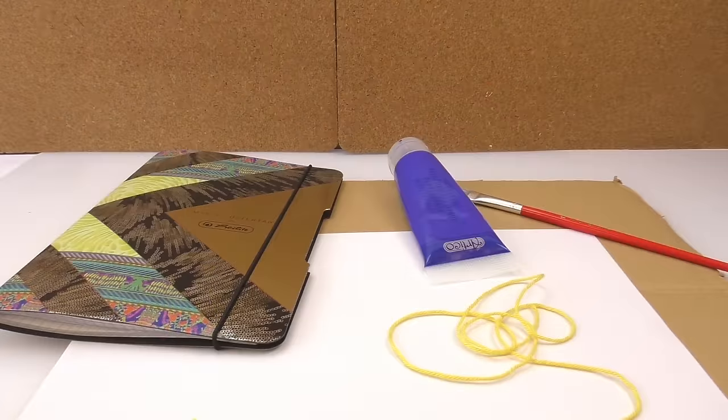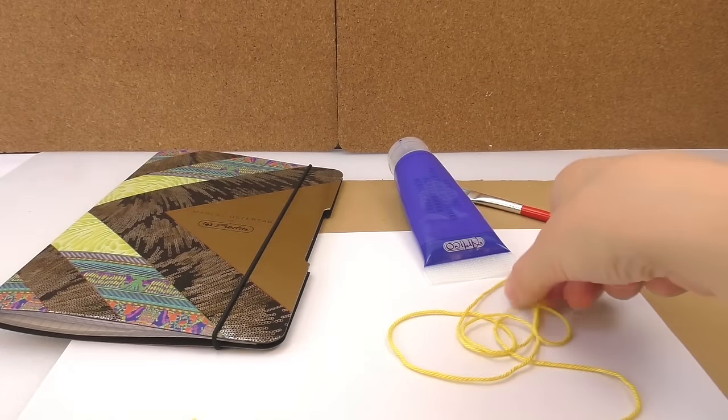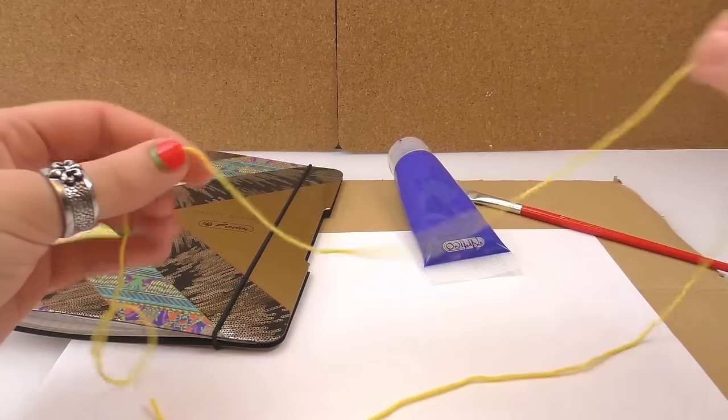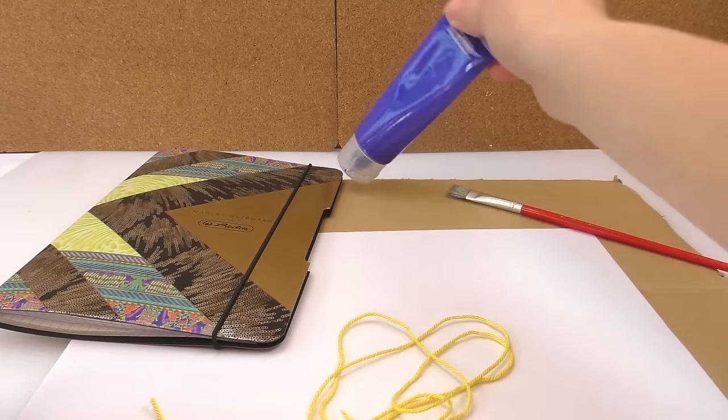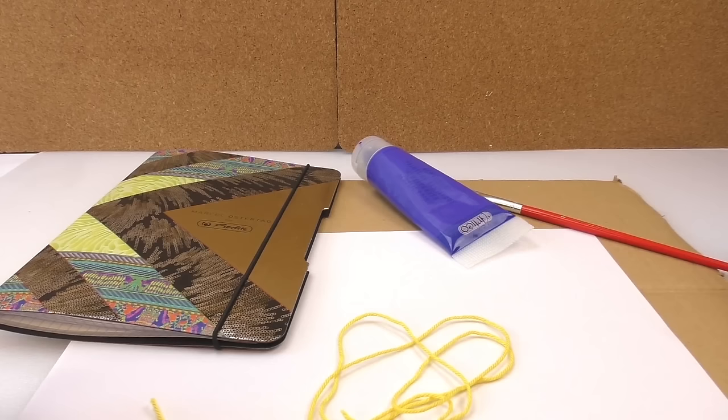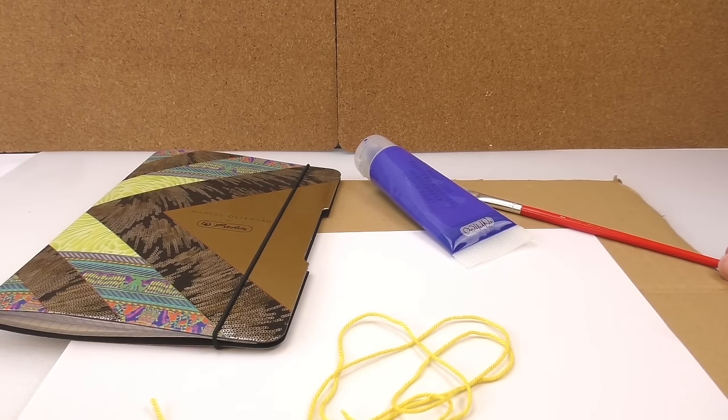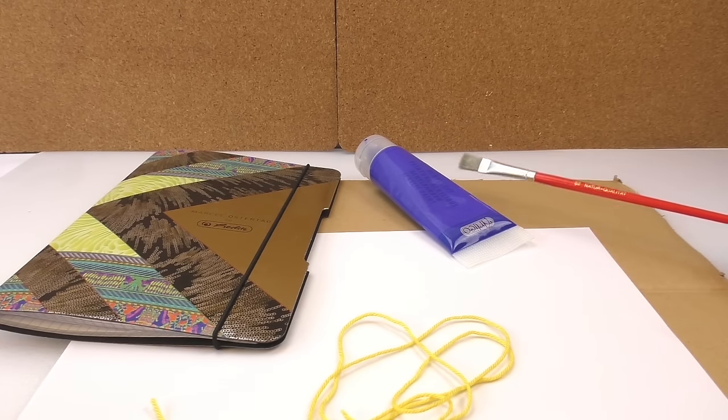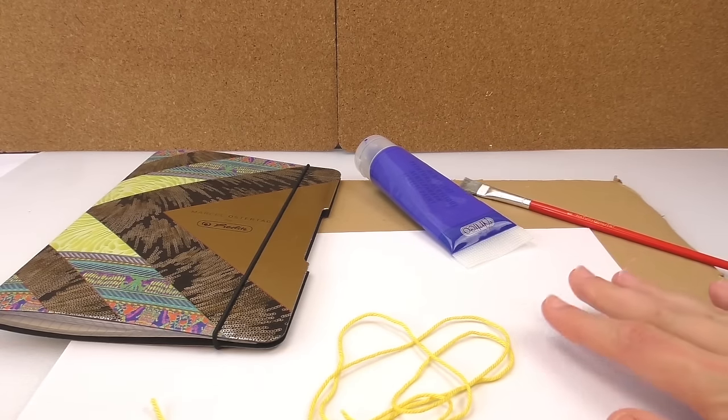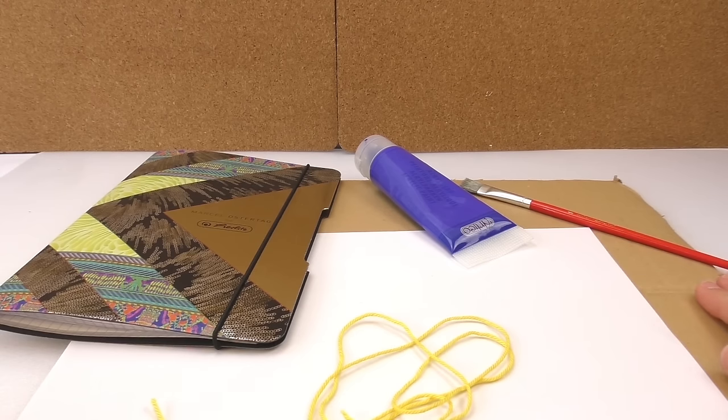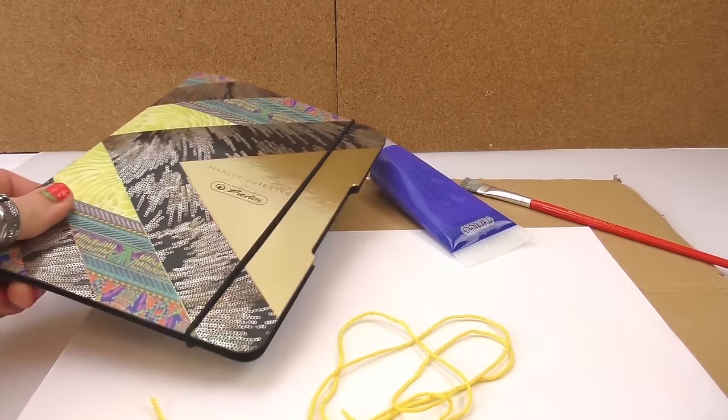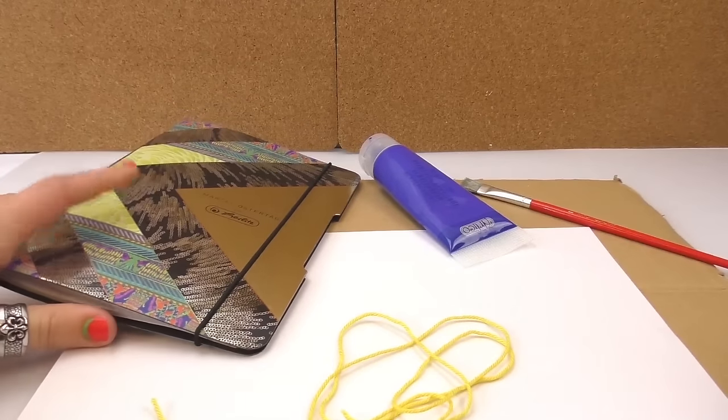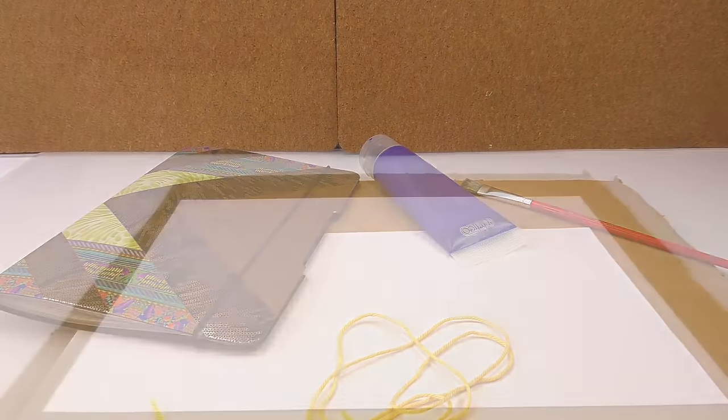To do a really cool drawing we need string. I have this yellow one but the color doesn't really matter. Acrylic paint - I have purple but you can choose the color that you want. A brush to put the paint on our string, a blank piece of paper, a piece of cardboard to put as a base, and a notebook. It can be a book or a notebook and I'm going to show you how to use it later.